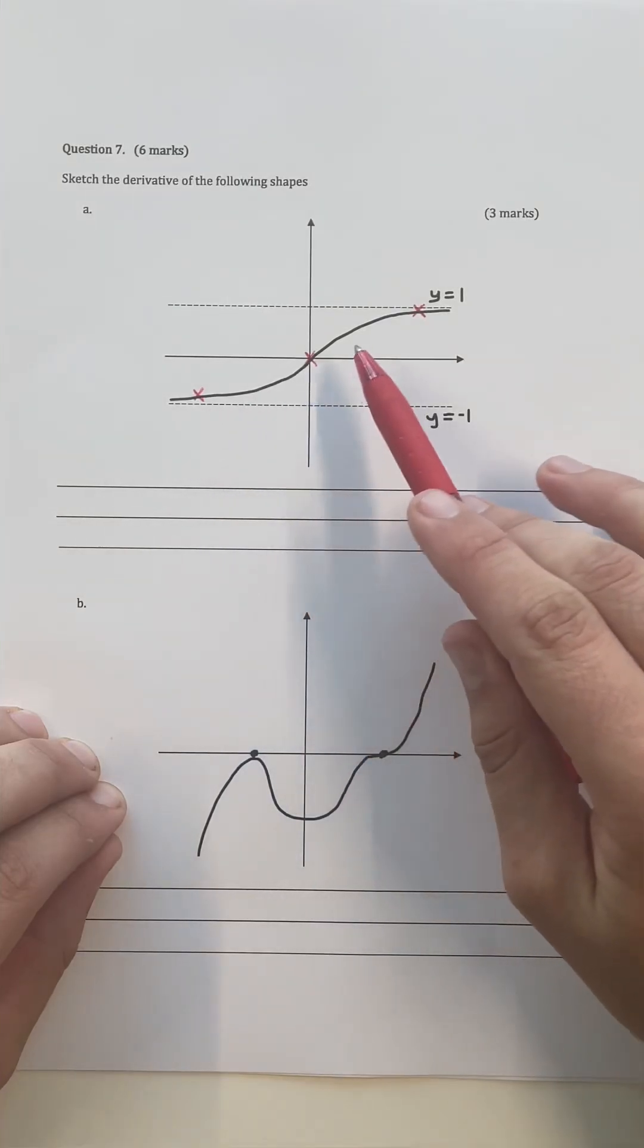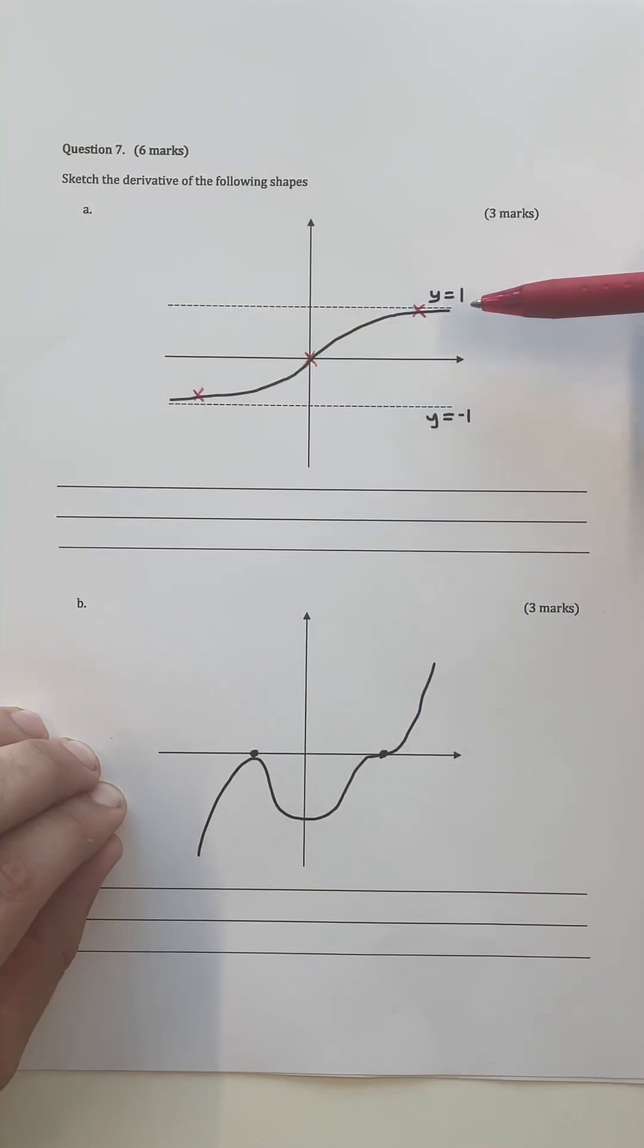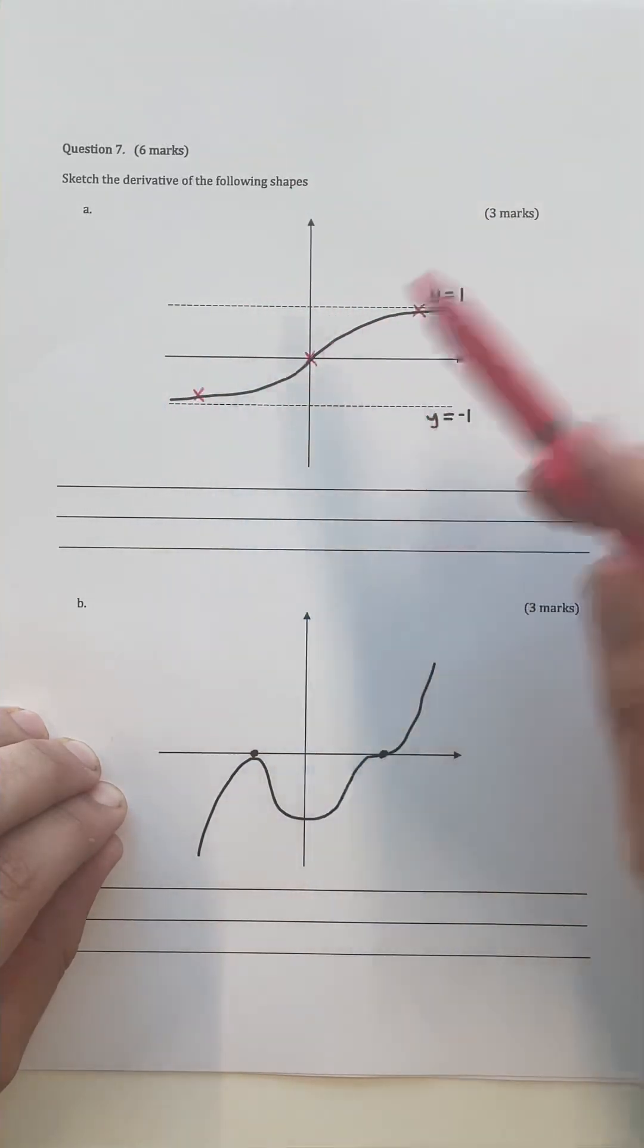In this case, we're asked to sketch the derivative of this function here, but we're not actually given the function rule. We have to base our derivative shape purely off the features of this graph.